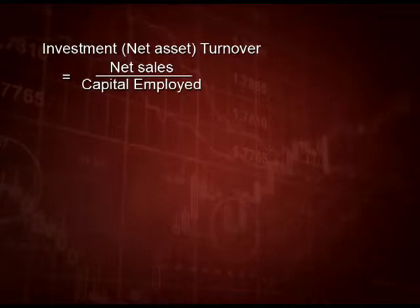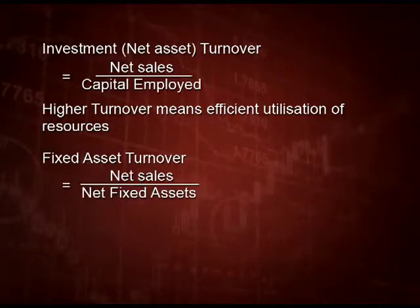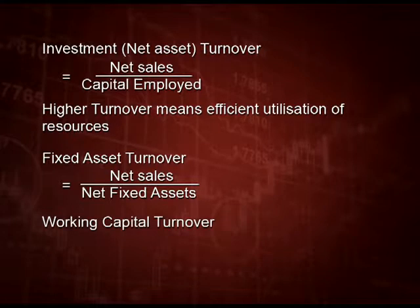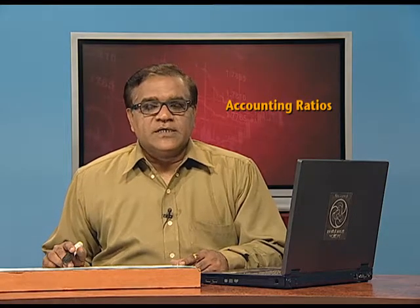The next ratio is investment turnover or net asset turnover. Net assets are also equal to capital employed. This ratio equals net sales upon capital employed, and a higher turnover means we are utilizing our resources very efficiently. The next ratio is fixed asset turnover ratio: net sales upon net fixed assets. The last ratio in this category is working capital turnover ratio: net sales upon working capital, where working capital is current assets minus current liabilities.